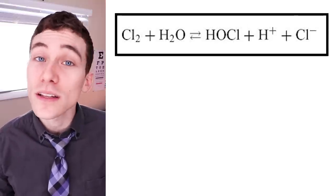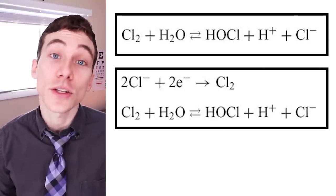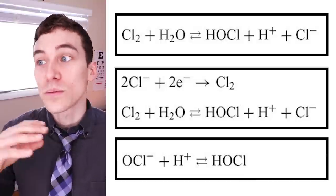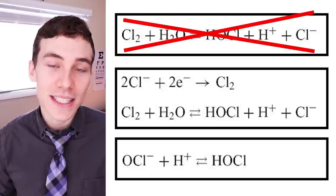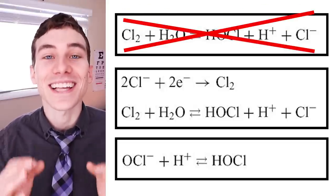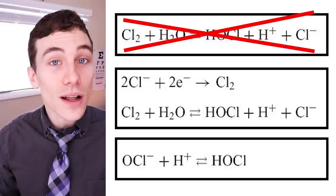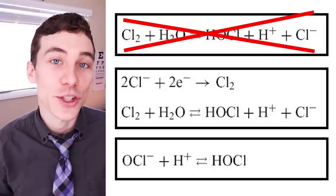Hypochlorous acid can be made through three different ways: through the hydrolysis of chlorine gas, through the electrolysis of a salt solution, or from the acidification of hypochlorite. Most companies do not use the first method because chlorine gas is very dangerous and difficult to work with. So most companies are either using the electrolysis method or the acidification of hypochlorite. But ultimately the purity of the hypochlorous acid is equivalent and the bactericidal properties as well as its safety profile are all the same.